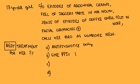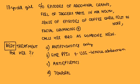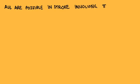Next, all are possible in stroke involving temporal lobe except: fluent aphasia, contralateral superior quadrantanopia, contralateral homonymous hemianopia, conceptual apraxia. Try guessing the answers.